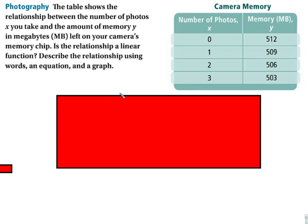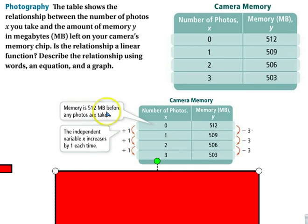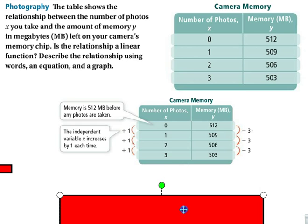So is it linear? Is the first question. So what we need to do is we need to look at it as a chart. We already have the chart over here. So notice that the memory is changing by three megabytes, and the independent variable is increasing each time. So that is the first way to start.